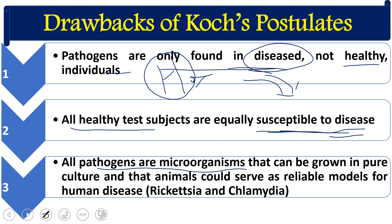Another drawback is that not all pathogens can be grown in pure culture. According to Koch, all isolated causative agents should be re-cultured in the laboratory under artificial conditions. However, we now know there are a number of organisms that cannot be easily cultured in the lab, such as Rickettsia, Chlamydia, and HIV. These are pathogenic agents that cannot be grown in the laboratory, representing a significant limitation of the postulates.